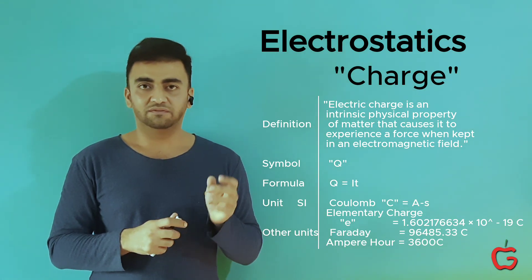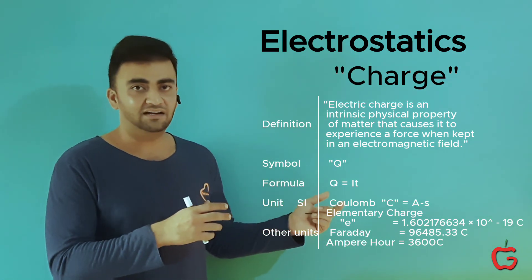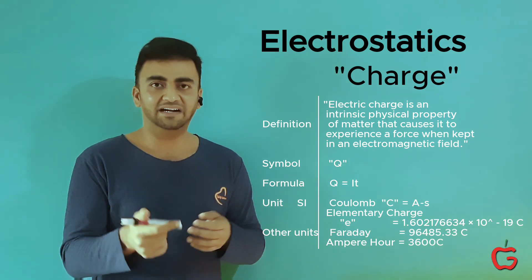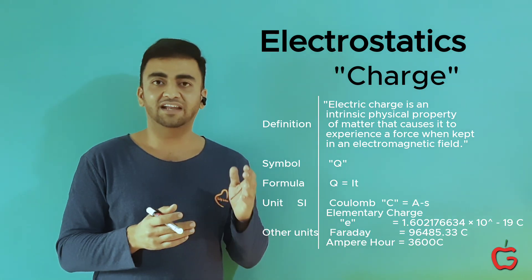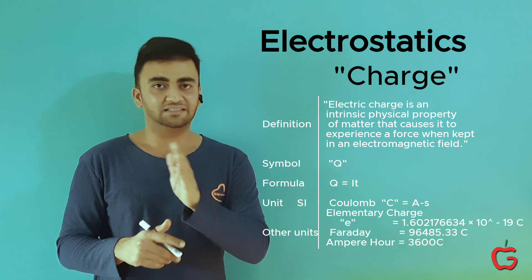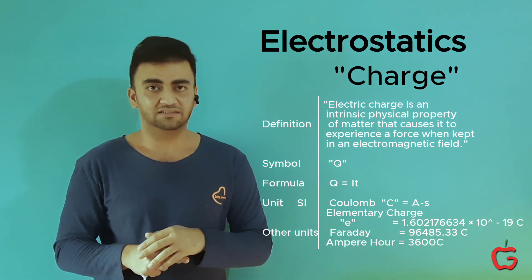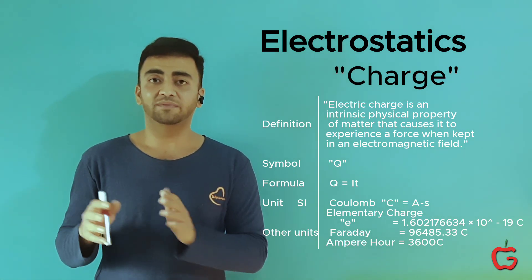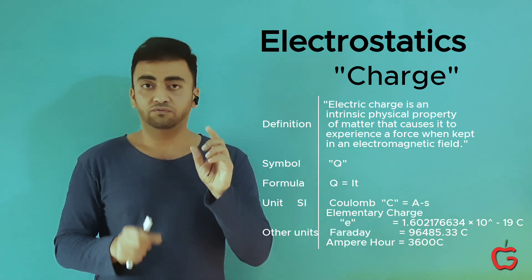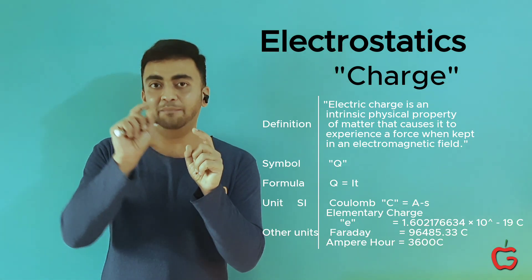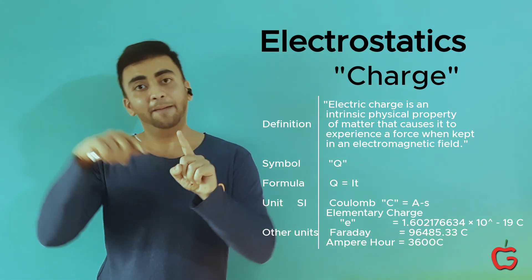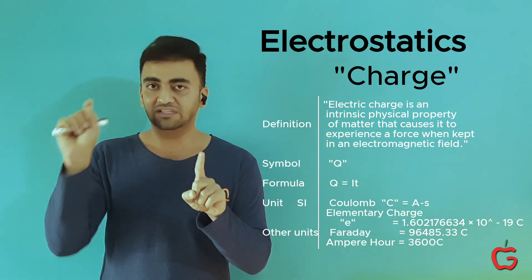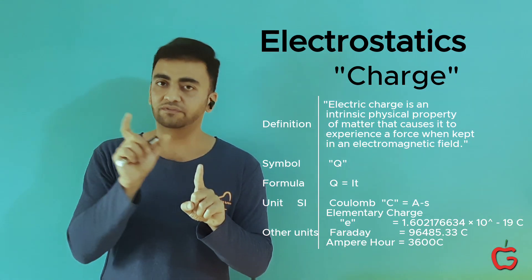Another popular unit of charge is the ampere-hour, which you may be familiar with from batteries. One ampere-hour equals 3,600 Coulombs. So when your mobile battery is listed as 4,000 mAh capacity, that means 4 ampere-hours, which equals 4 × 3,600 Coulombs of charge.